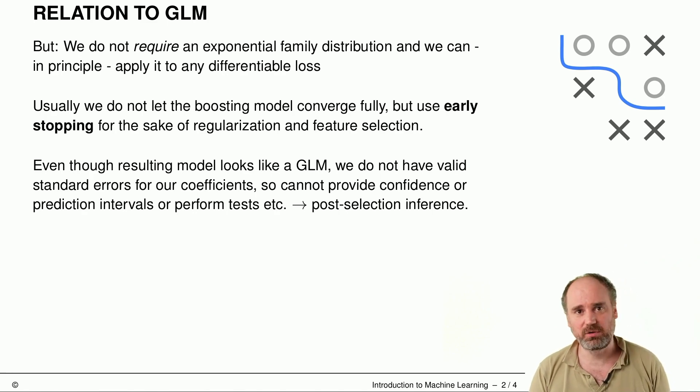The problem is the resulting model usually doesn't have well-behaved standard errors for our coefficients. It's harder to provide confidence intervals for the coefficients or prediction intervals, or to run tests. You can try to bootstrap that. There are also more complicated procedures from the family of post-selection inference. On the other hand, alternative procedures like the lasso have similar associated problems, and running an L1 regularization on top of an LM or GLM is of course a viable alternative.